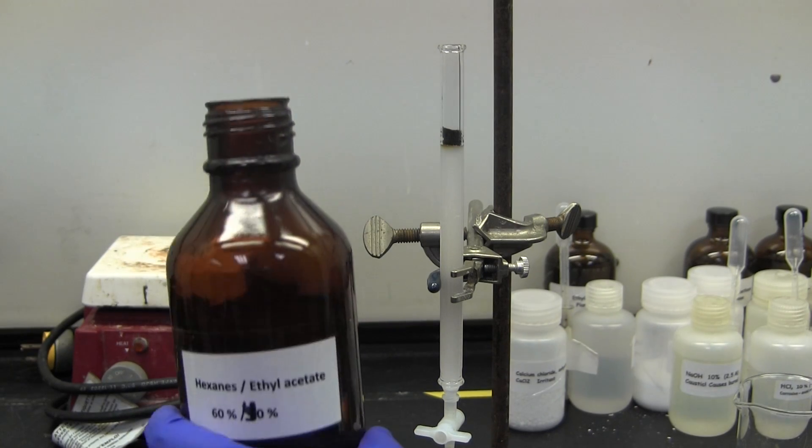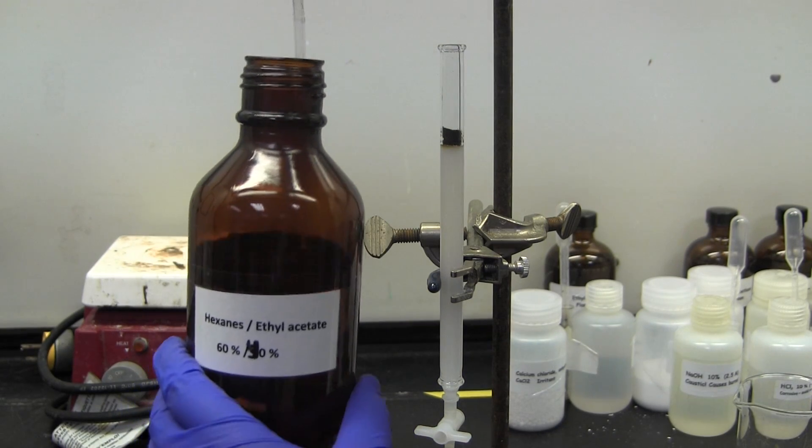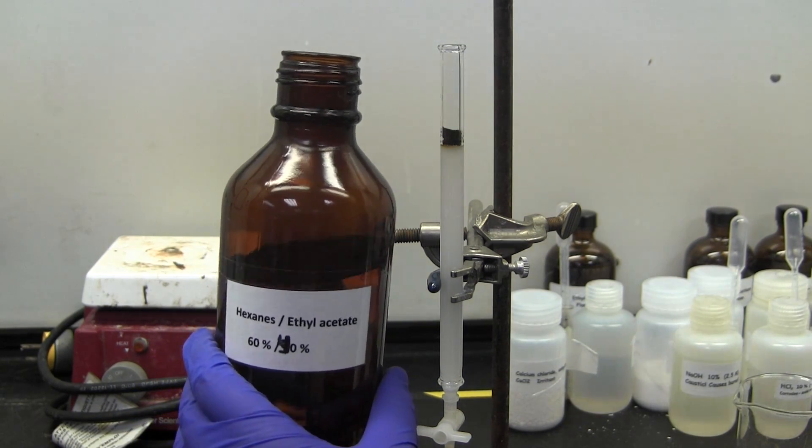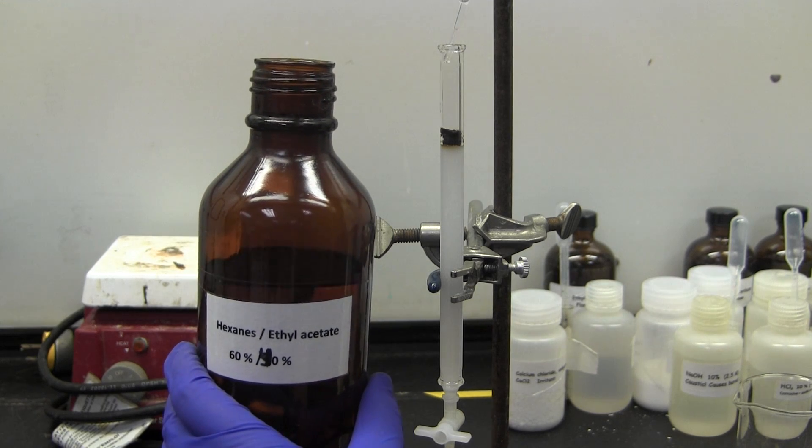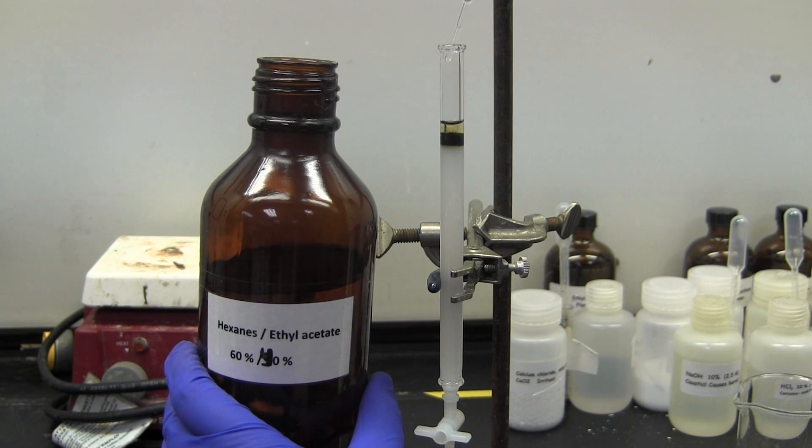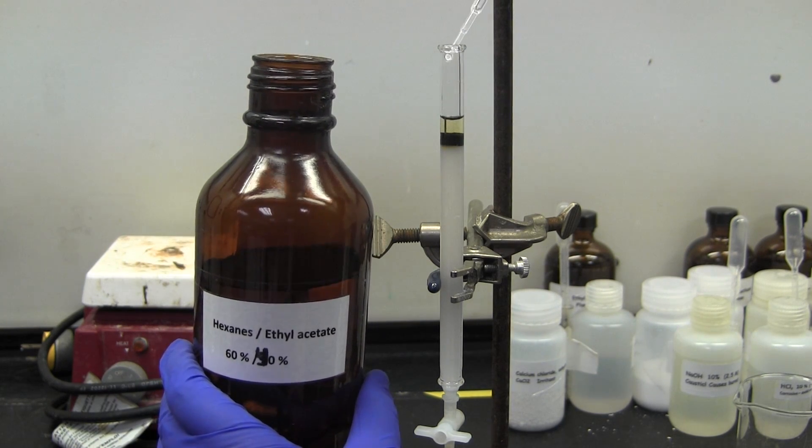Once you have loaded your unknown onto the top of the column, begin to add your chosen solvent mixture. Do not allow the top of the gel to run dry, meaning do not expose it to air. Always keep it covered with solvent.